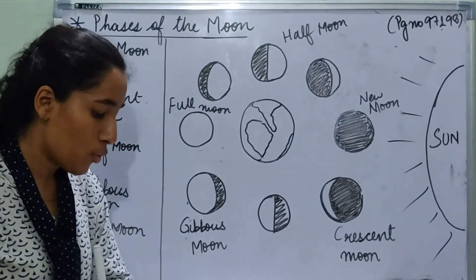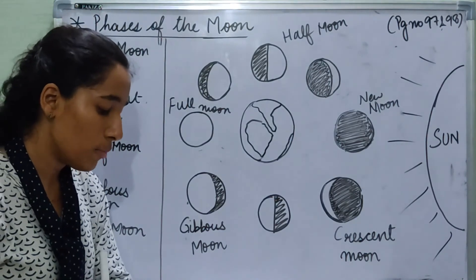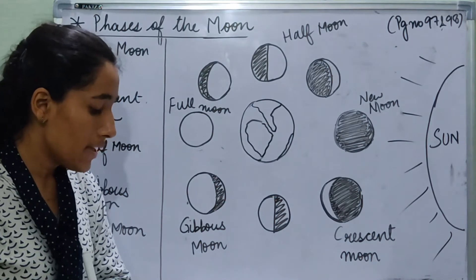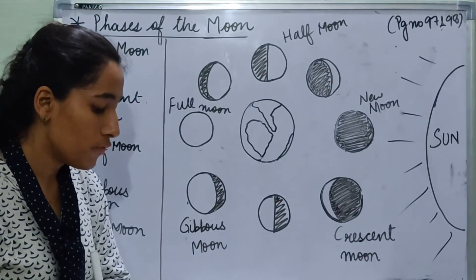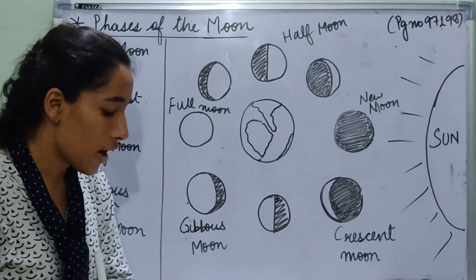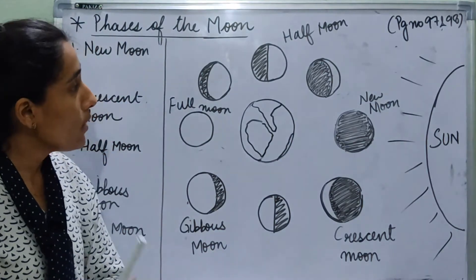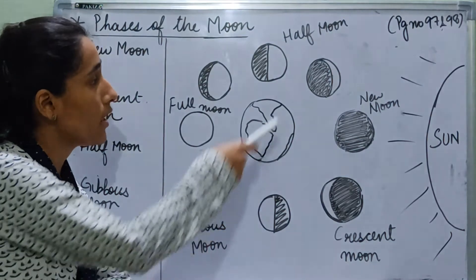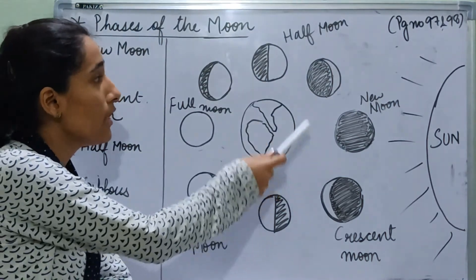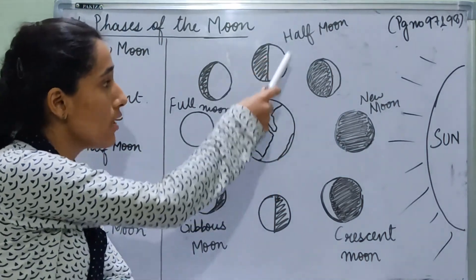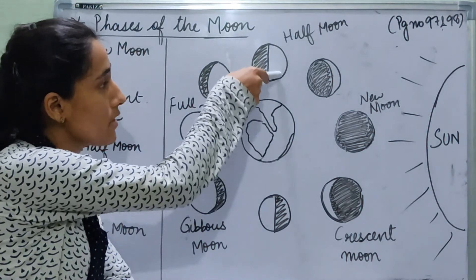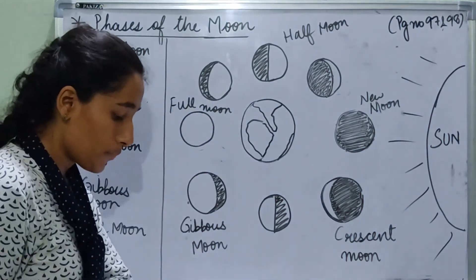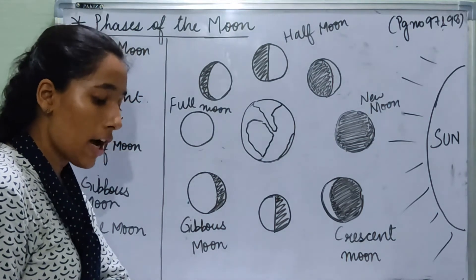Half moon: when half the portion of the illuminated side of the moon is facing towards the earth, we can see half of the moon from the earth. We can only see half the illuminated part of the moon from the earth, so it is called the half moon.